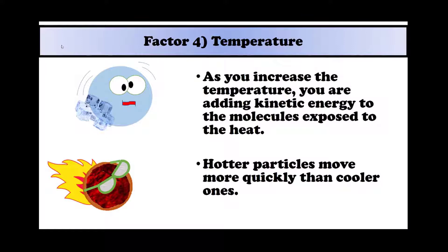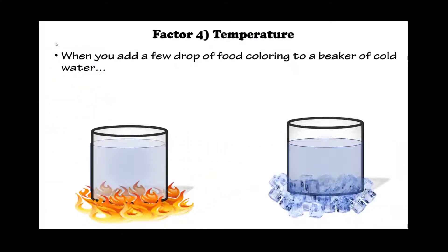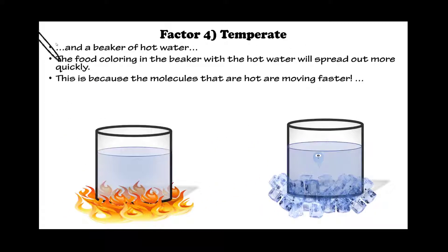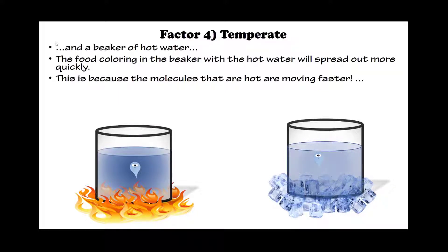Factor number four: temperature. As you increase the temperature, you are adding kinetic energy to the molecules exposed to that heat. Hotter particles move more quickly than cooler ones. When you add a few drops of food coloring to a beaker of cold water and a beaker of hot water, the food coloring in the beaker with hot water will spread out more quickly, because the molecules that are hot are moving faster.